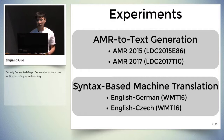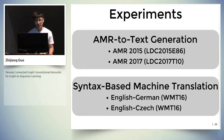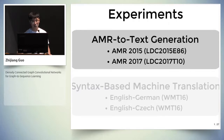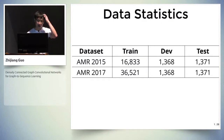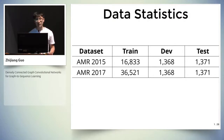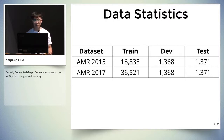We evaluate our model on two different tasks and four datasets. For the first task, the AMR-to-text generation task, we have two datasets: AMR-2015 and AMR-2017. As we can see in the table, the number of training instances in the AMR corpus is relatively small, which makes it a challenging task.